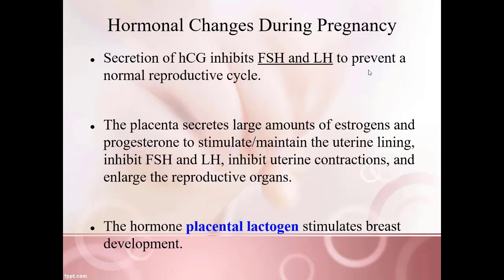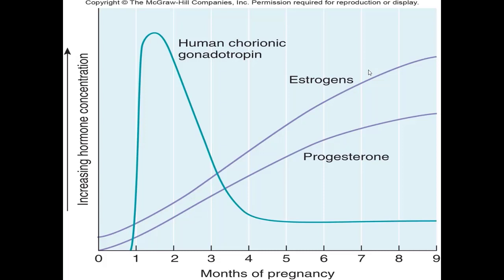Estrogens and progesterone will also inhibit FSH and LH, and they will inhibit uterine contractions — you don't want the uterine muscles to contract and potentially dislodge the implanted blastocyst. These hormones additionally enlarge the reproductive organs. The hormone placental lactogen stimulates enlargement of the breast. A graph here shows a clear comparison of HCG, estrogen, and progesterone levels throughout the various months of pregnancy, with a very large spike of HCG early on, then estrogens and progesterone taking over.